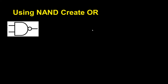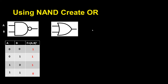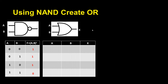This is my NAND gate — we discussed it previously. These are my possible input combinations and I prepare my output combinations as well. Now I am going to create an OR gate and write its truth table.